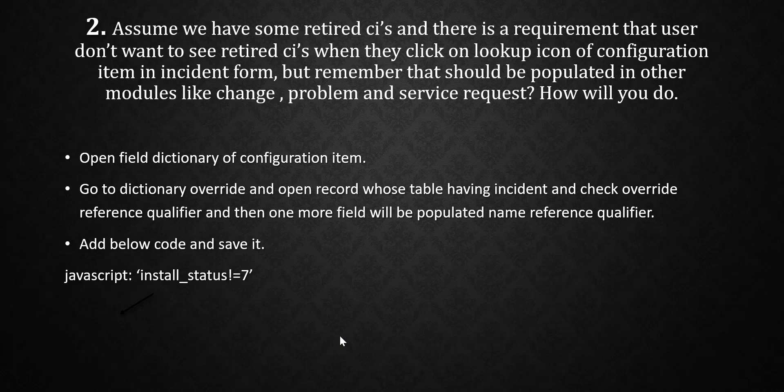Assume we have some retired CIs and there is a requirement that the user doesn't want to see retired CIs when they click on the lookup icon of the configuration item in the incident form. But those retired CIs should still be visible in other modules like change, problem, and service request. So in the incident form, when they click the lookup icon, they don't want to see retired CIs in the CMDB — but in change request, problem, or service request, the retired CIs will be visible.